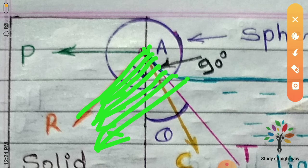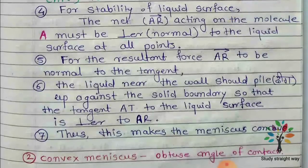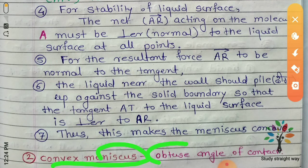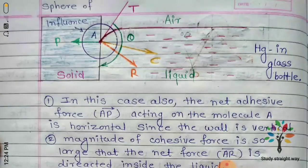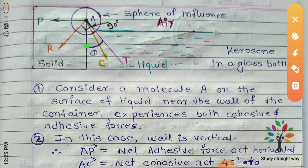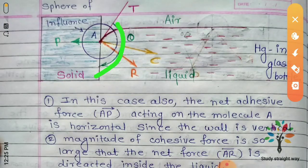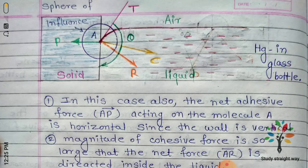The angle is an acute angle. This is the sphere of influence. In the case of mercury in a glass container, this is the same molecule with its sphere of influence. The problem is that mercury molecules have a very strong force of attraction between them — it is a very strong extra cohesive force.